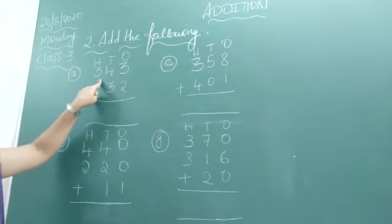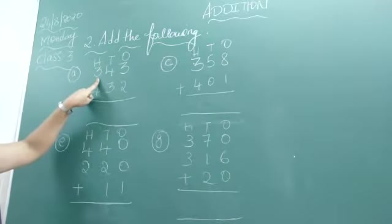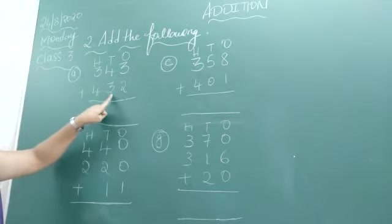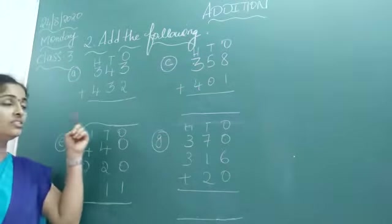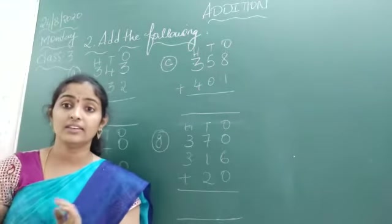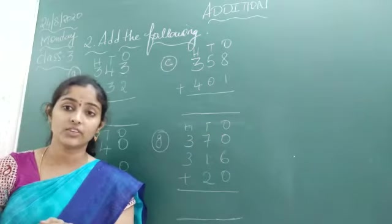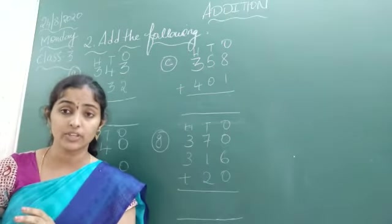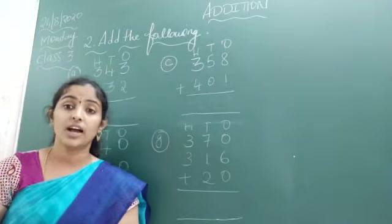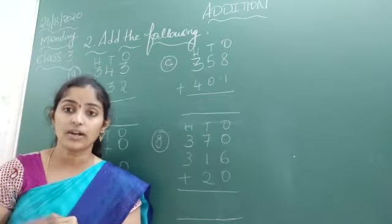Read what is that number. That is 343 plus 432. How will you add? You will start adding from the ones place, then after the tens, then hundreds.